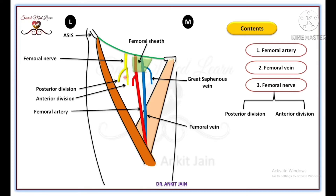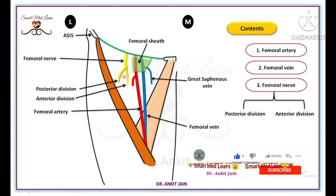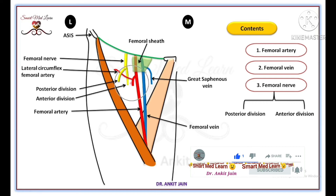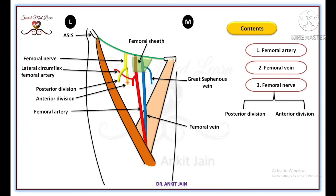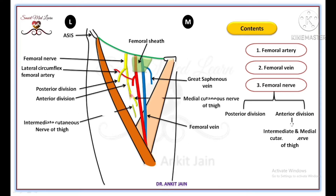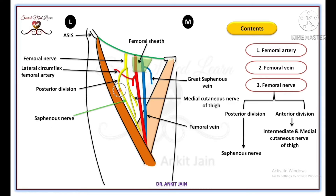Both divisions are separated from each other by the lateral circumflex femoral artery, which is a branch of the profunda femoris artery. The anterior division of the femoral nerve gives rise to the intermediate and medial cutaneous nerves of the thigh. The posterior division of the femoral nerve gives rise to a cutaneous nerve known as the saphenous nerve, which runs downward along the medial border of sartorius muscle.